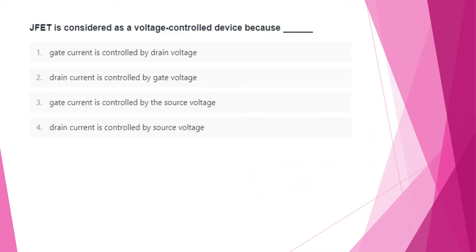First question: JFET is considered as a voltage-controlled device because the drain current is controlled by gate voltage.